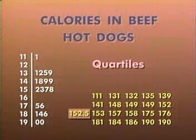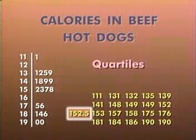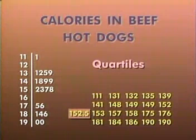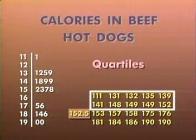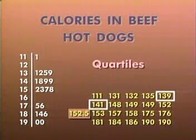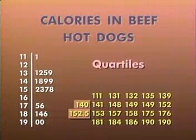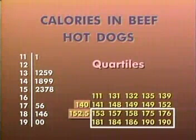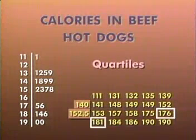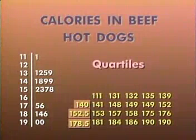So let's find the quartiles of our hot dog distribution. We found that the median fell midway between the 152 and 153 values, so these ten values lie below the location of the median. The first quartile is the median of these ten observations — that's midway between the fifth and sixth value, or 140. The third quartile is the median of the ten observations above the median — once again, this is the average of the fifth and sixth values, or 178.5.